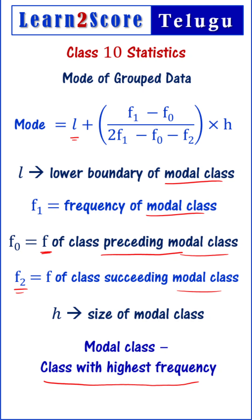The lower boundary of the modal class is denoted as L, and the frequency of the modal class is denoted as F1. The frequency of the class preceding the modal class is denoted as F0, the frequency of the class succeeding the modal class is F2, and the size of the modal class is H.